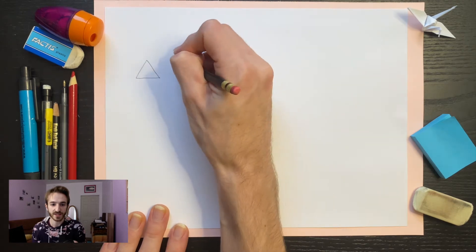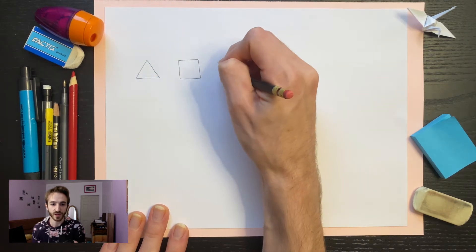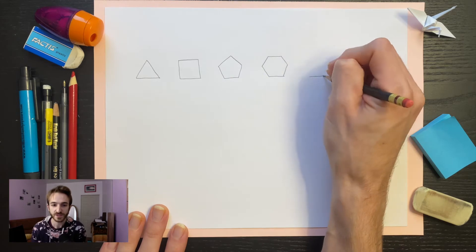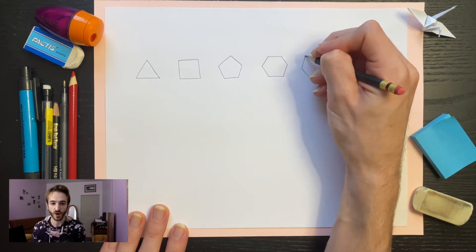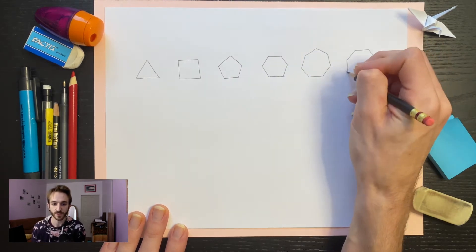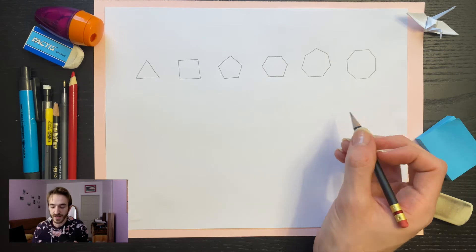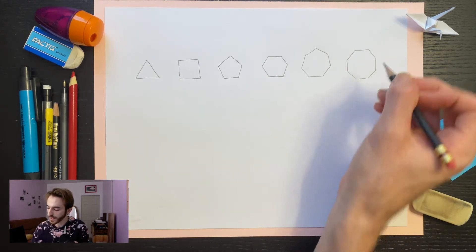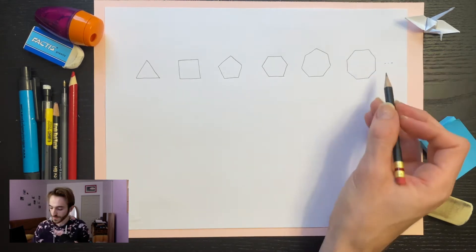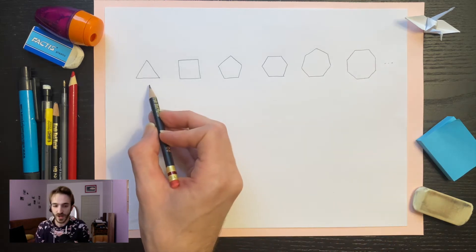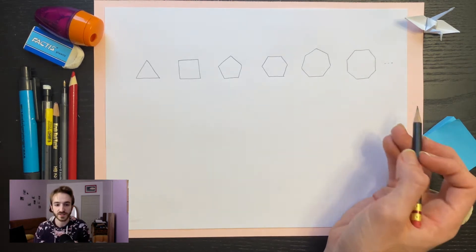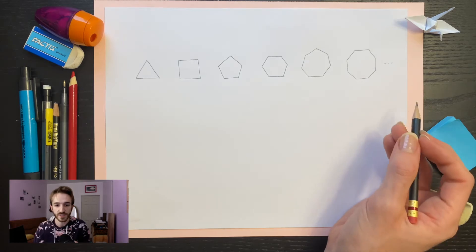The most famous type of polygon is a regular polygon — a shape where all of the sides and angles are equal. A nice thing about polygons is there's exactly one regular polygon for each number of sides: a triangle, a square, a pentagon, a hexagon, a heptagon, an octagon, and so on up to infinity. That's actually not going to be true in higher dimensions.